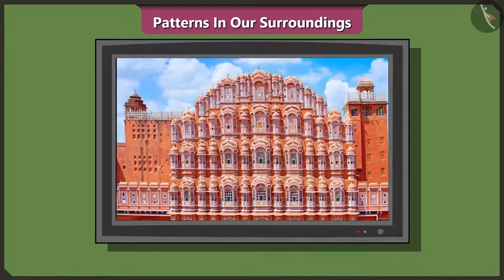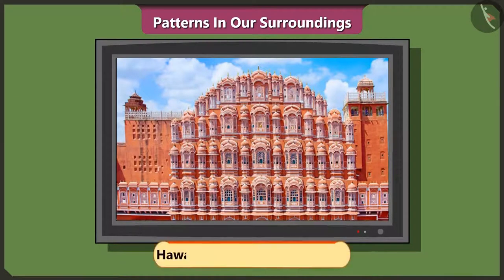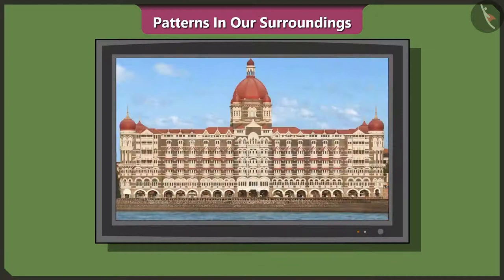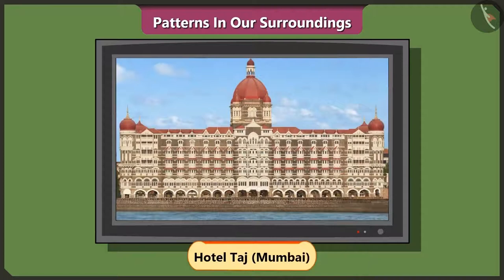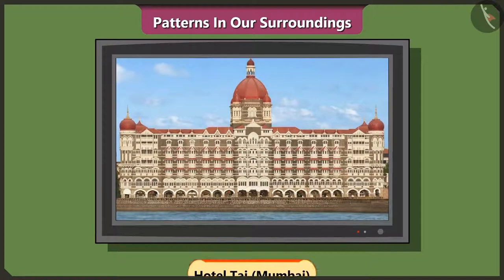Hey mummy, is there a pattern on this building as well? Yes, this building is the Hawa Mahal at Jaipur in Rajasthan. And this is the Taj Hotel in Mumbai. Mummy, these patterns on these buildings make them look so beautiful, isn't it?